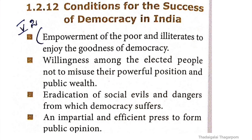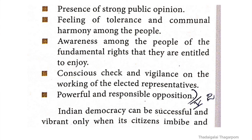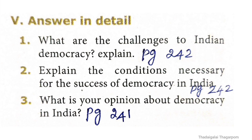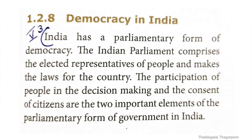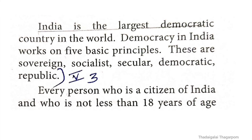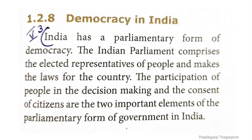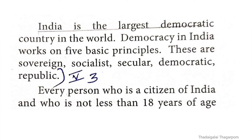Conditions for the success of democracy in India are on page 242, with 9 points. These include empowerment of the poor and illiterates to enjoy the benefits of democracy, and the last point is a powerful and responsible opposition. Third question: what is your opinion about democracy in India? The answer is on page 241, under the heading 'Democracy in India'. India has a parliamentary form of democracy and is a sovereign, socialist, secular, democratic republic.